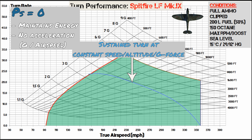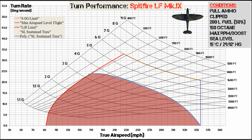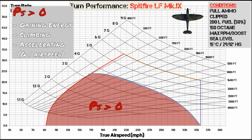Underneath the sustained turn line, shaded in red, is where your specific excess power is greater than zero — this is where you're gaining energy. This gives you the options to either start climbing, or you can increase your G-force to improve your turn performance, or you can increase your airspeed.